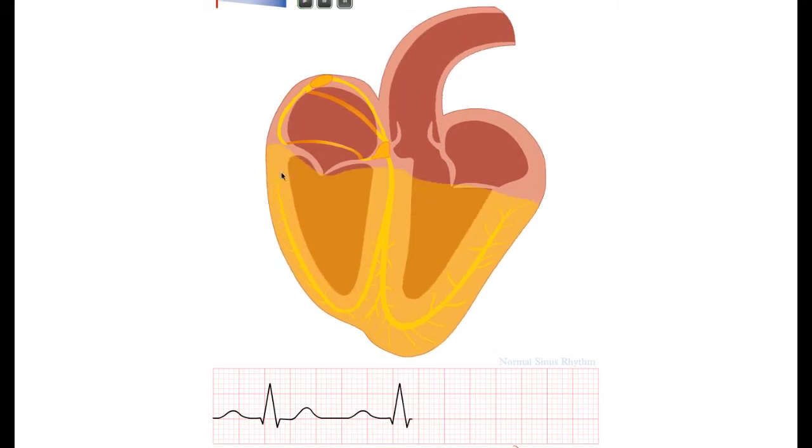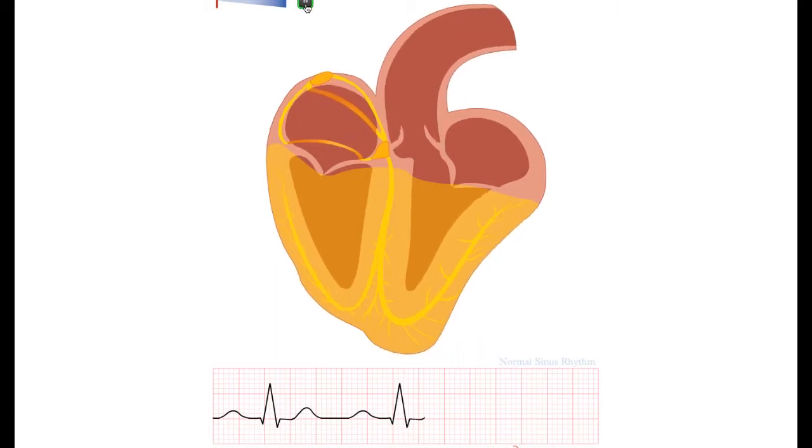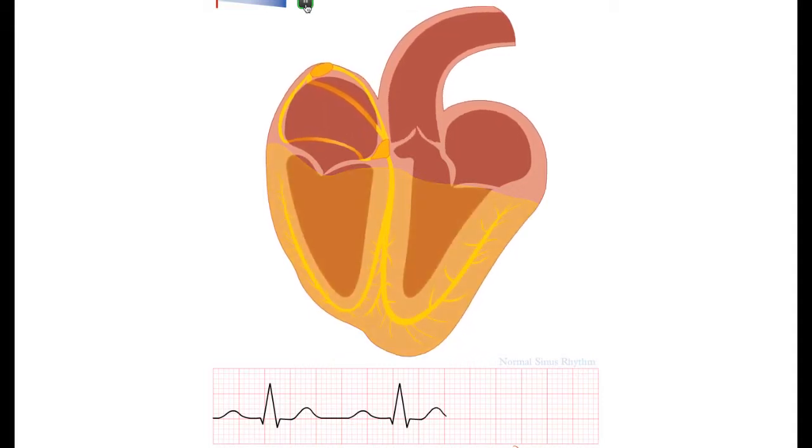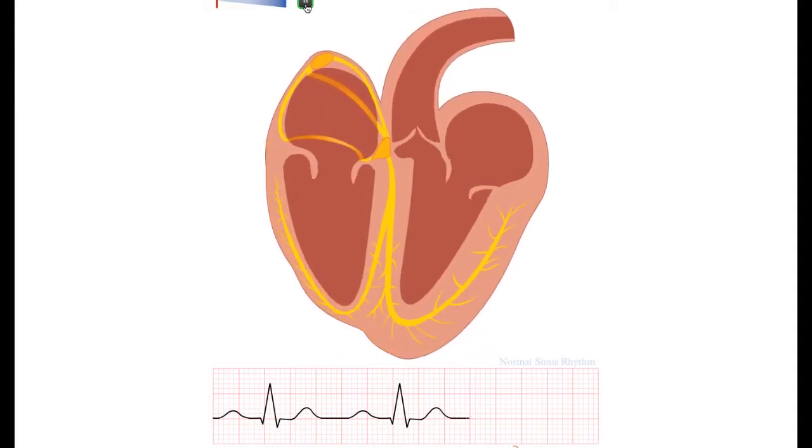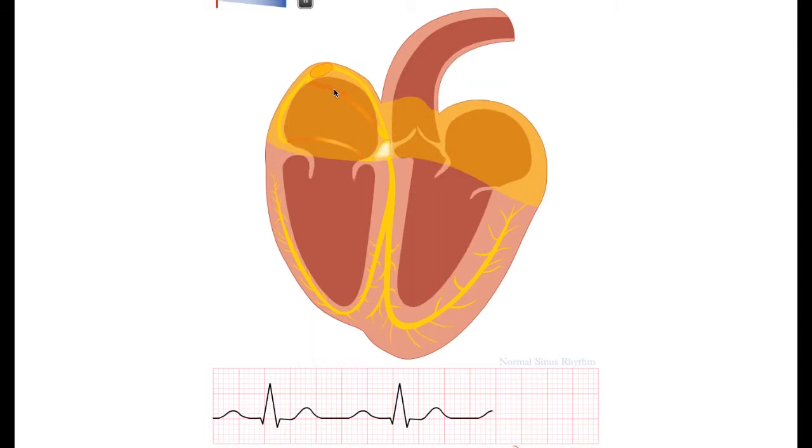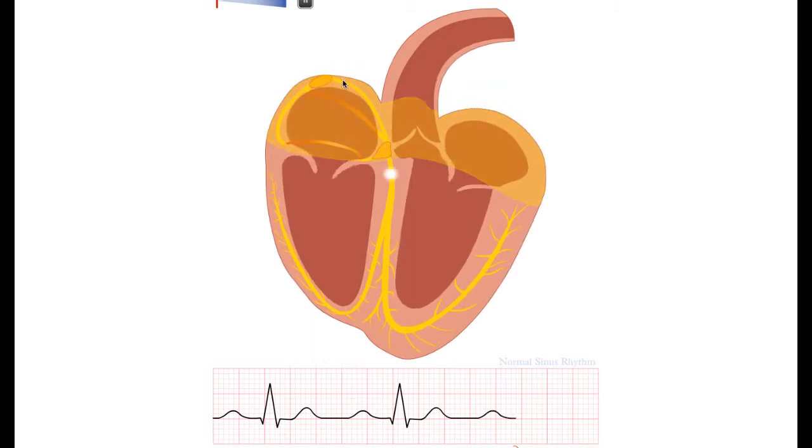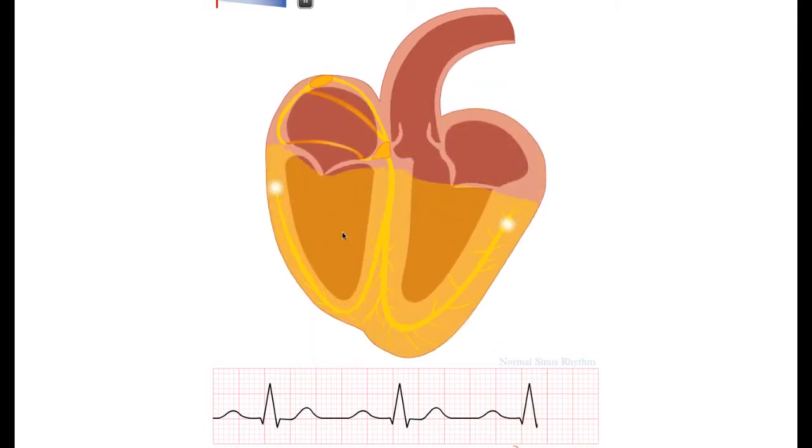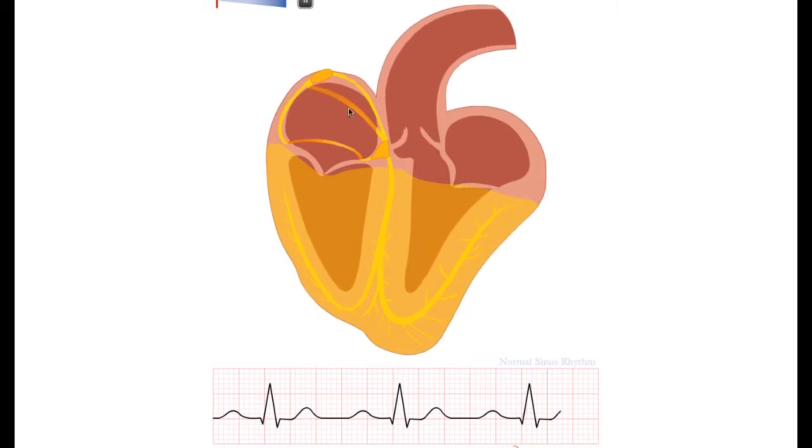And then the basal parts of the heart are activated, resulting in a small S wave in lead 2. So P wave, small septal Q, large R wave, and a small S wave.